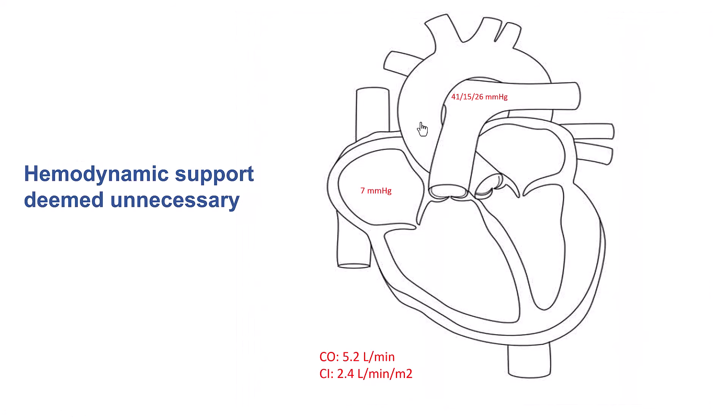The plan was to proceed with PCI of the right coronary artery. Given three-vessel disease, we performed a right heart catheterization. His pressures were good — RA pressure was seven, with normal pulmonary artery pressures and normal cardiac output. As a result, we decided not to use hemodynamic support.